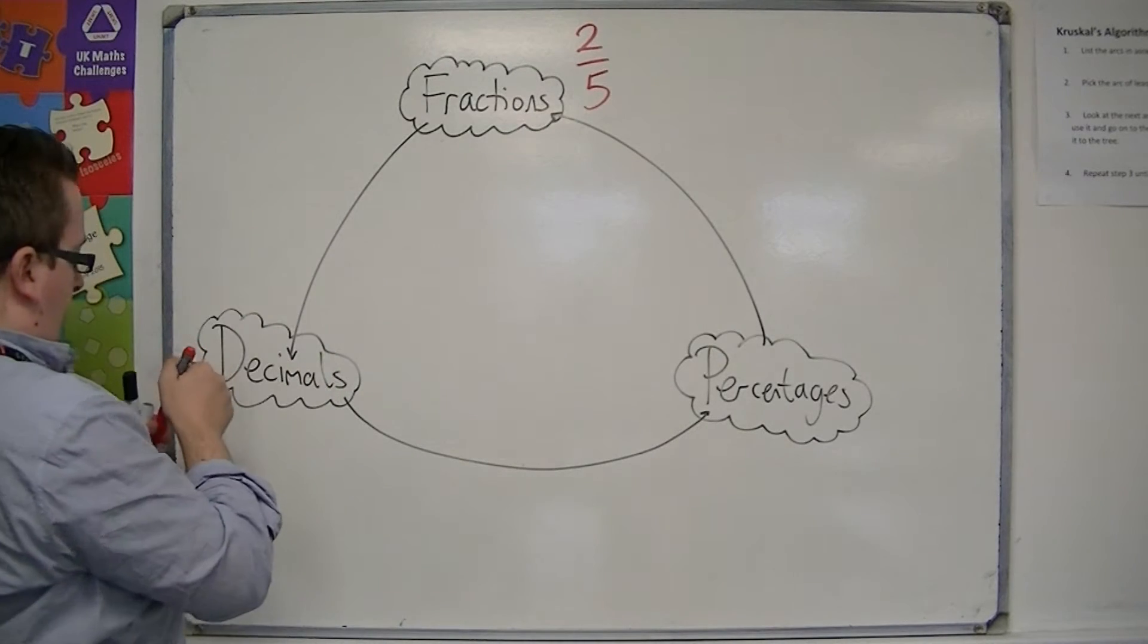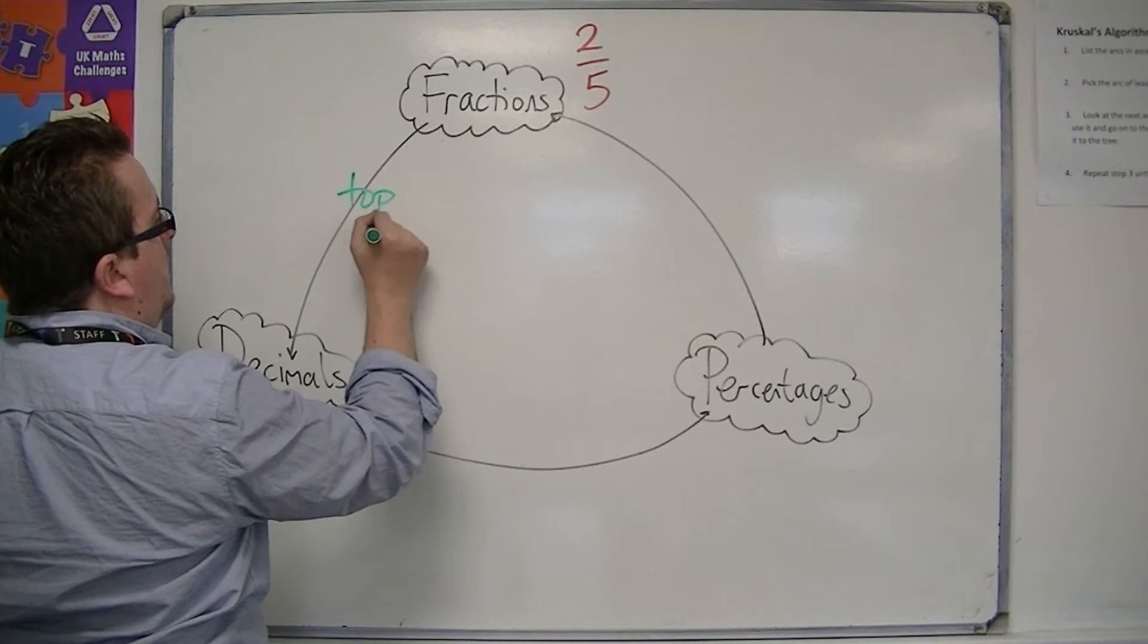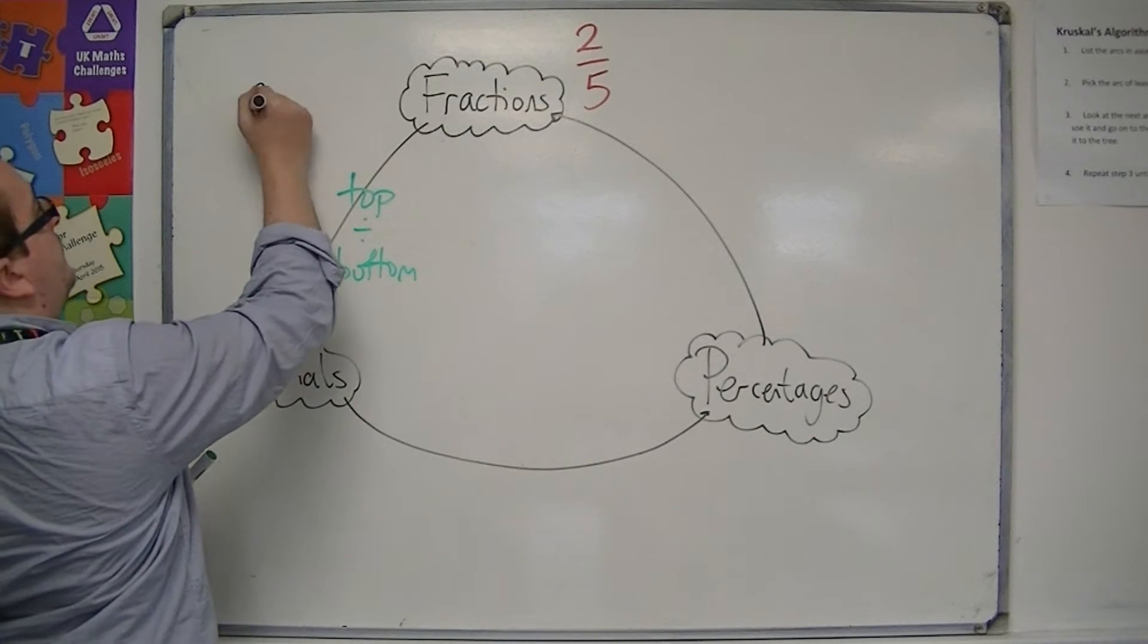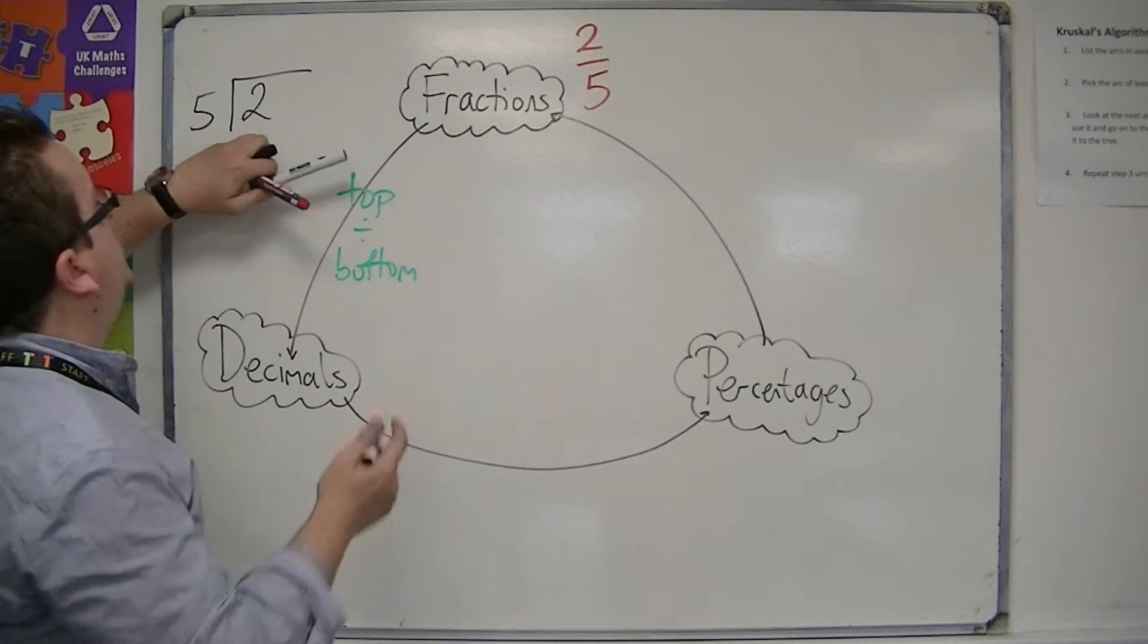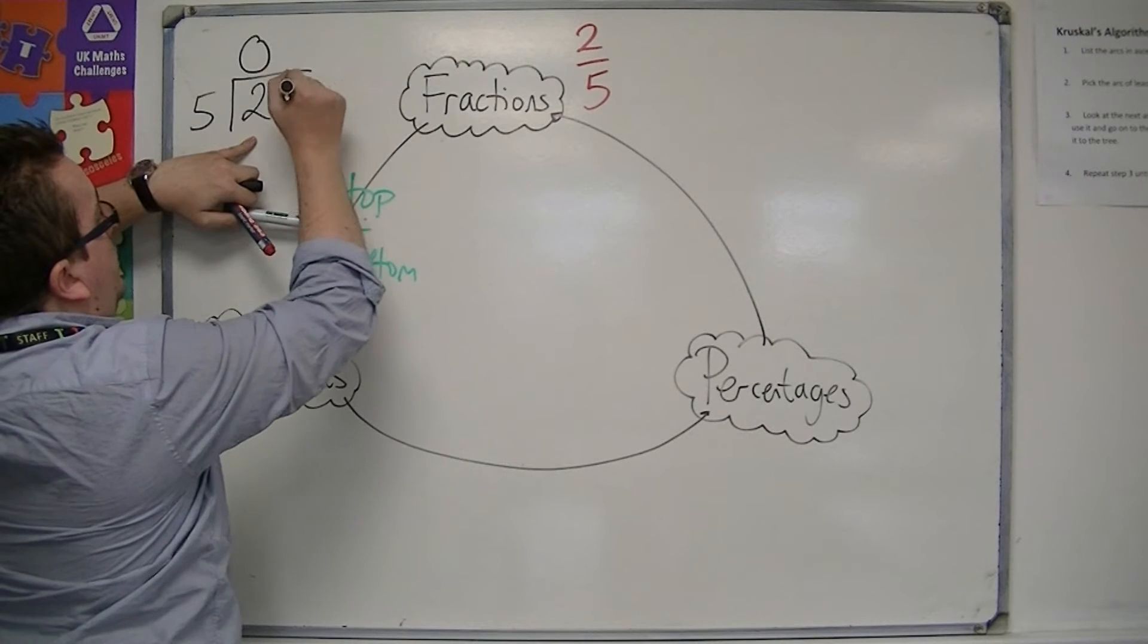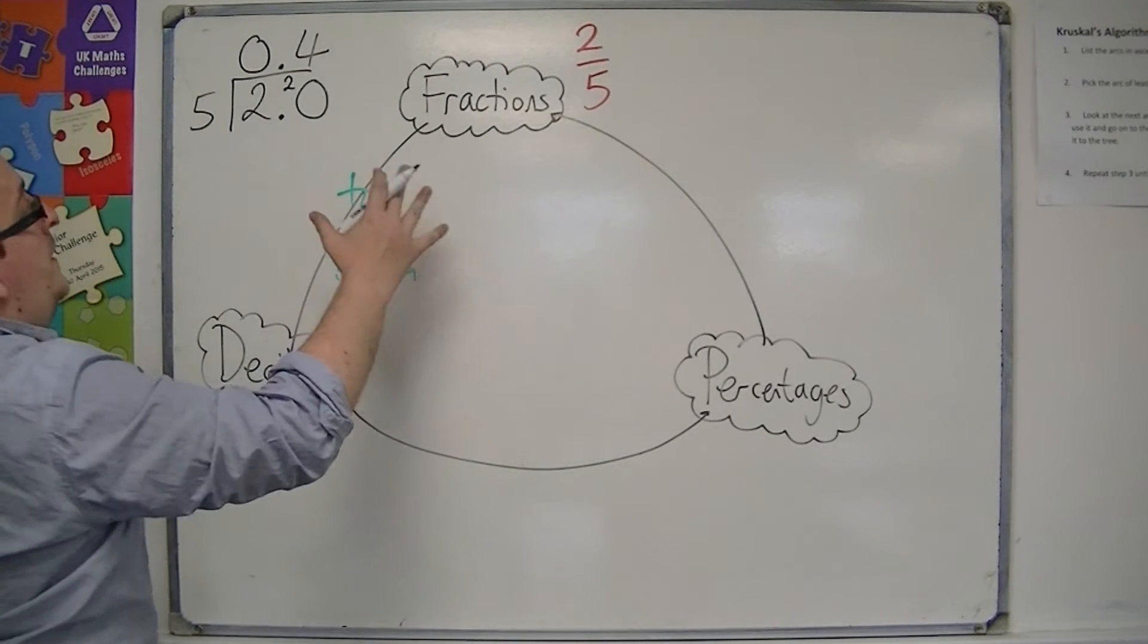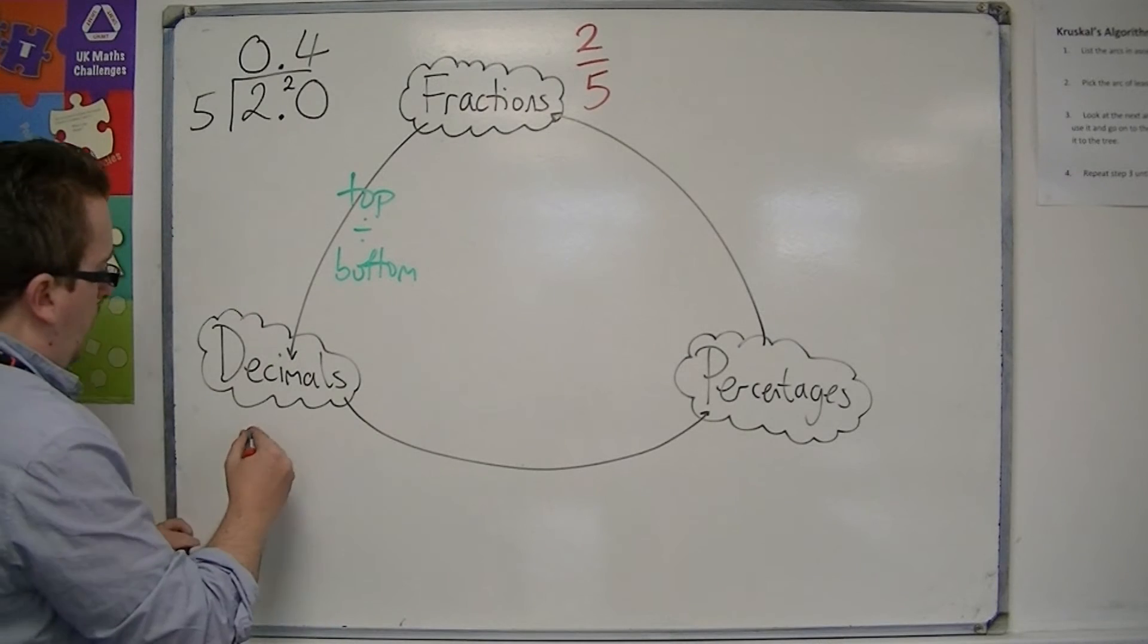So the process, I'll do that in green, is top divided by bottom. So we can do 2 divided by 5 using our short division technique. 5s into 2 goes 0 with 2 remainder. Put in the 0, the decimal point. 5s into 20 go 4. So 2 fifths as a decimal is 0.4.